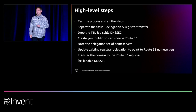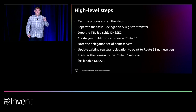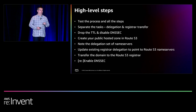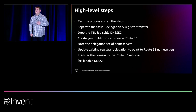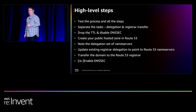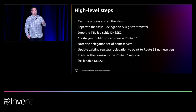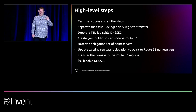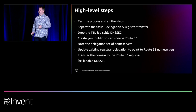The high-level steps: test the process first — that is absolutely key. Separate out the delegation and the transfer or registration — the two are separate pieces and you don't have to do both together. When starting to modify DNS, drop the time-to-live values down as low as possible so that when you make changes they take effect much quicker. Create the public hosted zone in Route 53 — this doesn't impact anything live for you. We'll assign you four name servers. Note the delegation set, and then only when you're ready, update the registrar delegation to point at those name servers. At that point, Route 53 becomes live. Then transfer the domain name, and finally re-enable DNSSEC if you had it.